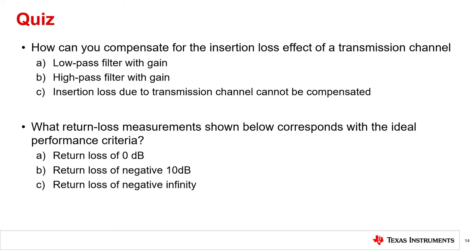Number one: how can you compensate for the insertion loss effect of a transmission channel? Is it A, a low-pass filter with gain; B, a high-pass filter with gain; or C, insertion loss due to the transmission channel can't be compensated? The answer is B. Since signal loss of a channel follows a low-pass filter characteristic, it can be compensated by an equalizer that follows a high-pass filter characteristic with gain.